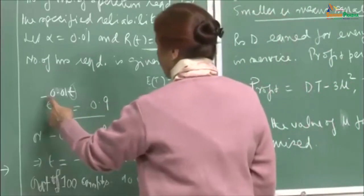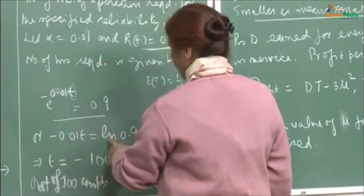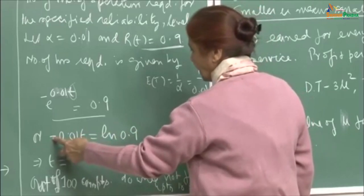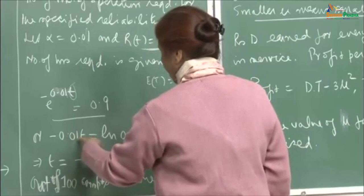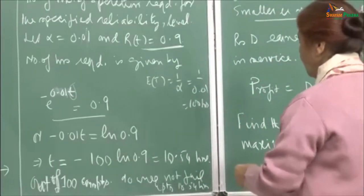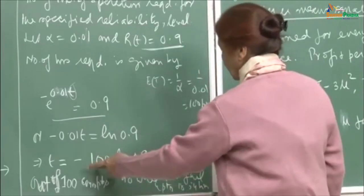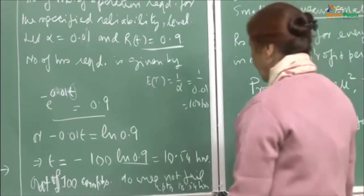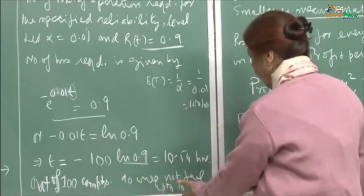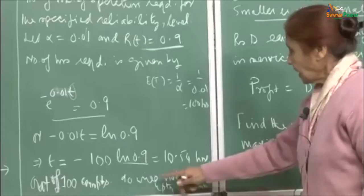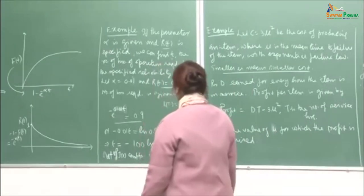Taking the log of both sides gives minus 0.01t equals ln(0.9). Since ln of a number less than 1 is negative, dividing by 0.01 gives t equals 100 times ln(0.9), which comes out to approximately 10.54 hours. This means that out of 100 components all working simultaneously, if they all operate for 10.54 hours, our expectation is that 90 of them will not fail — after 10.54 hours, 90 will still be working.